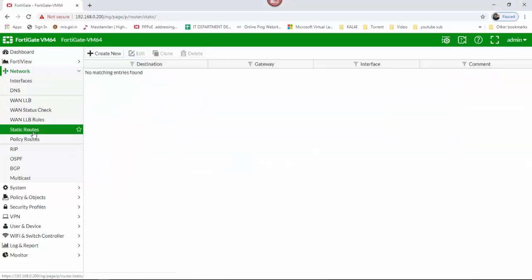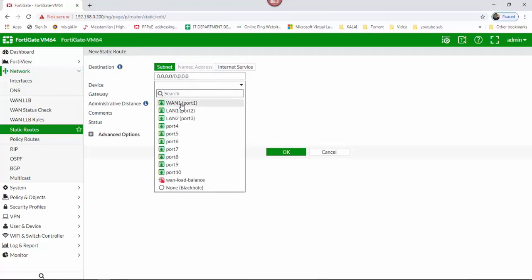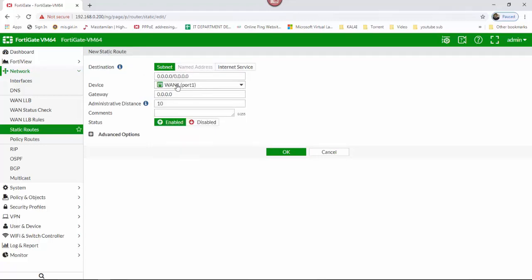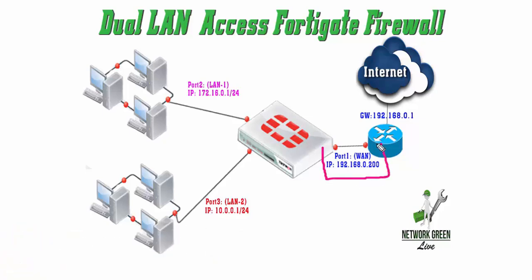Port 3 LAN 2, IP 10.0.0.1. Port 1 gateway — reach the gateway once configured.